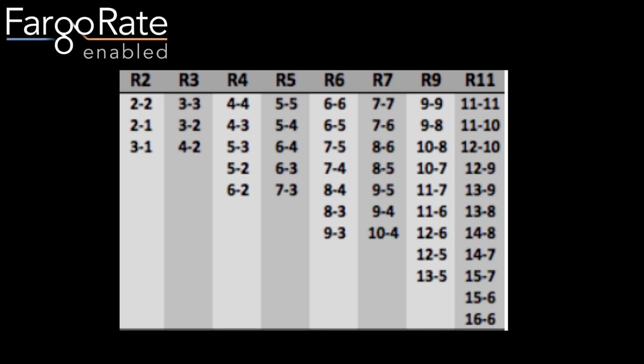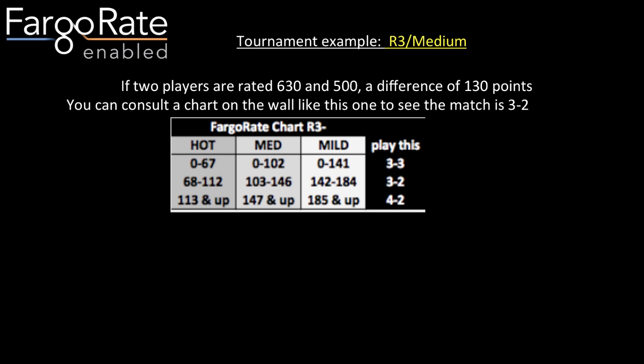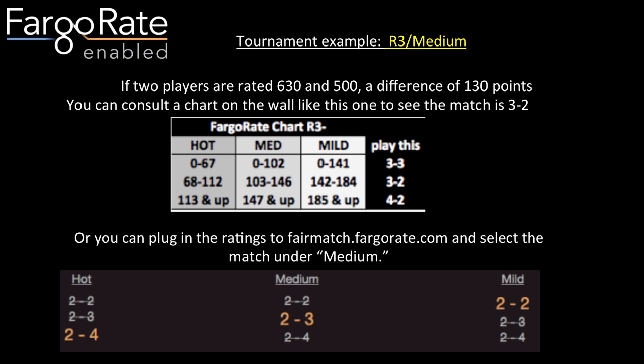Here's what several match charts look like — you see chart R5 in the middle, the one we've been discussing. When you specify a tournament, you might use chart R5 all the way through on both sides of a double elimination, or choose R5 on the A side and R4 on the one-loss side. Specifying a tournament means choosing a chart, say R3, and a handicap level — hot, medium, or mild. For example, with chart R3 and medium handicaps, two players rated 630 and 500 (a difference of 130 points) would play a 3-2 match — verifiable via a wall chart or by entering ratings at fairmatch.fortnerrate.com and selecting chart R3.